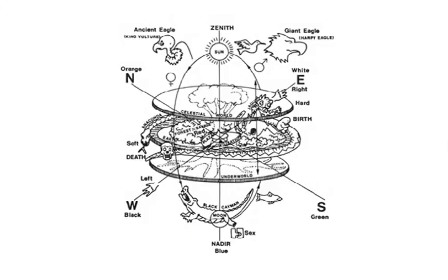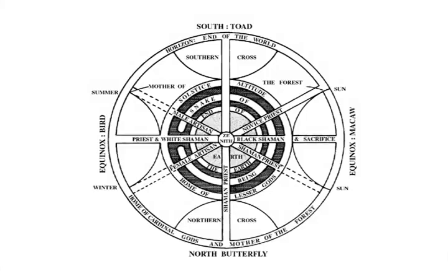Here we see the cosmology of the Shipibo tribe of the Peruvian Montanya. This includes the tree of life, the circular continent and surrounding ocean, and the world-girdling serpent.